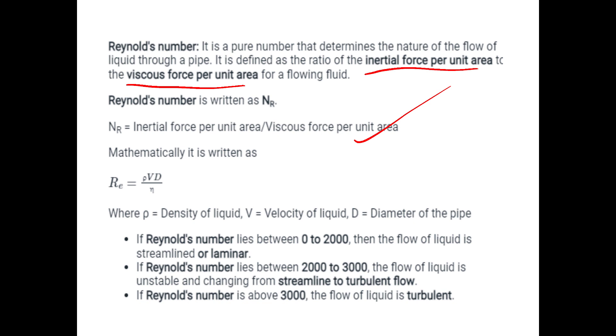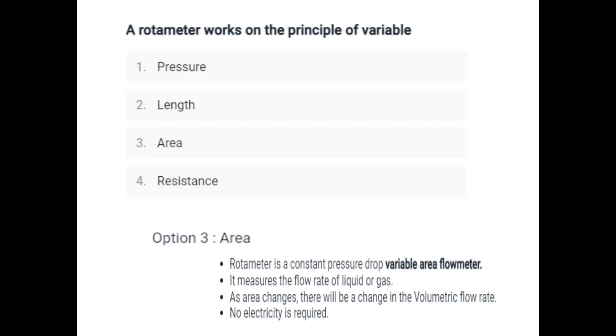Where rho is the density of liquid, V is the velocity of liquid, D is the diameter of pipe. If Reynolds number is 0 to 2000, the flow is streamlined or laminar. In 2000 to 3000, the flow is unstable and changing from streamline to turbulent flow. If Reynolds number is above 3000, the flow of liquid is turbulent.